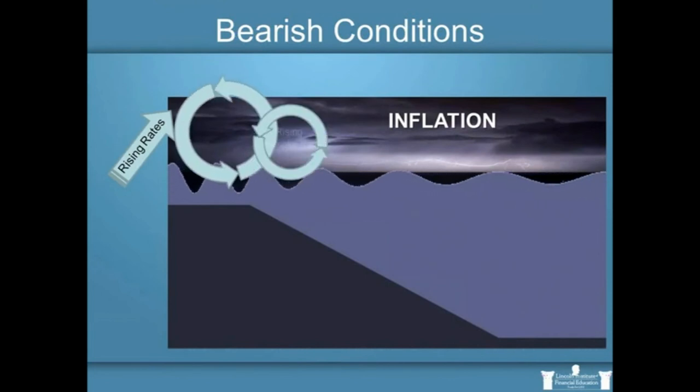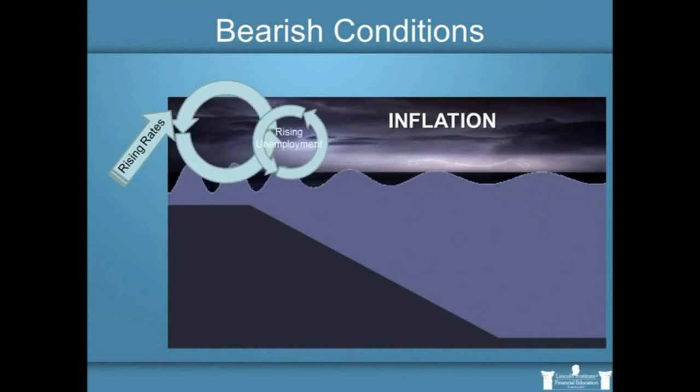We're going to see unemployment actually start to rise at some point. It won't happen initially. There is always a little bit of a delay, and that's the part that the Fed always has trouble with. They can never quite figure out what that delay is before they've made rates rise too fast or too hard, or brought them down too fast and too far.